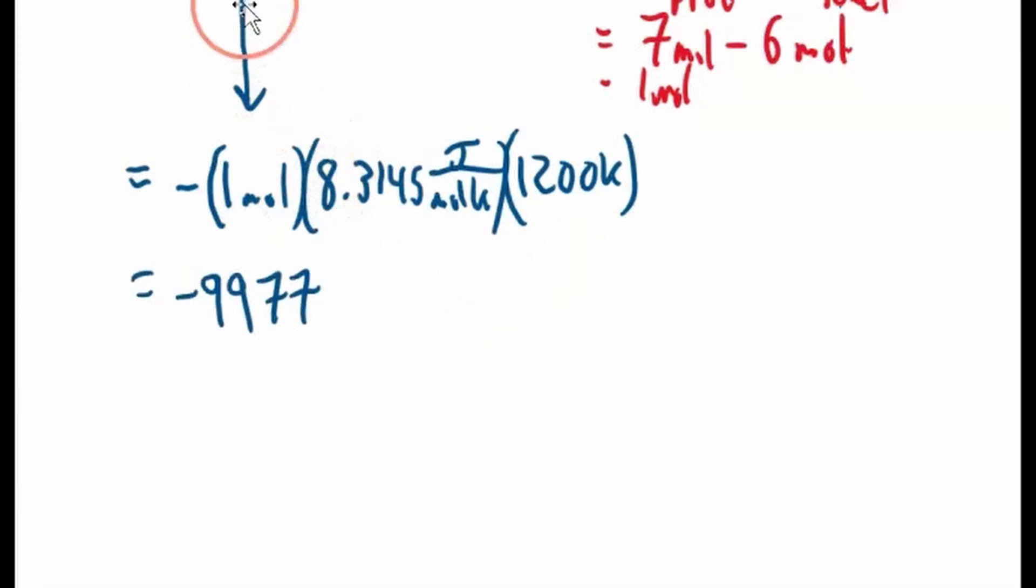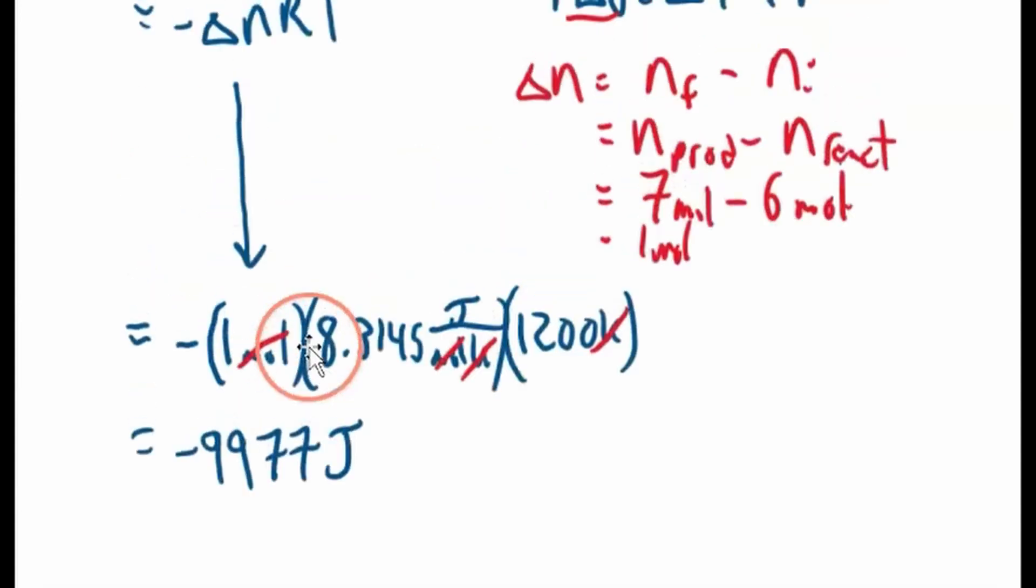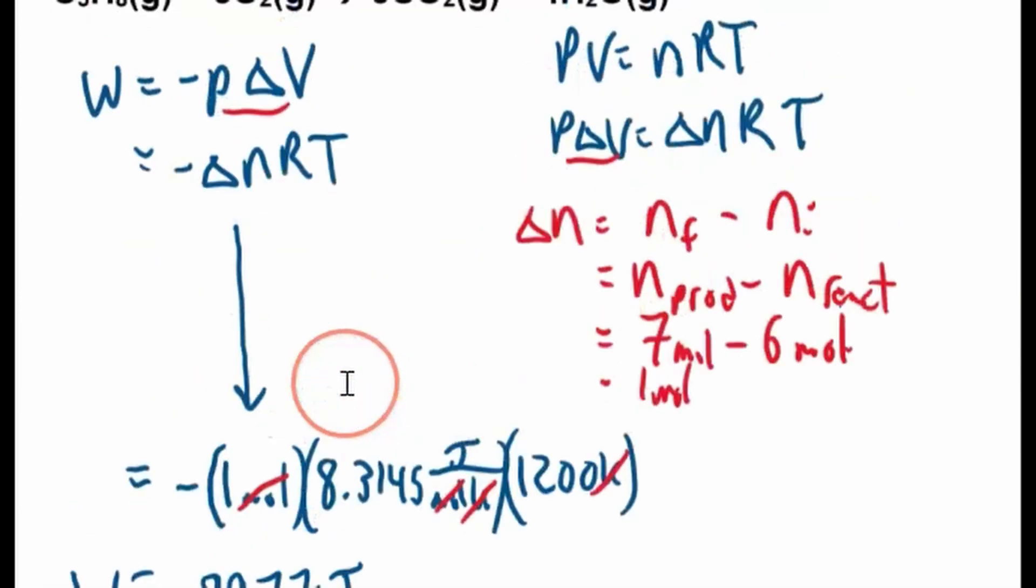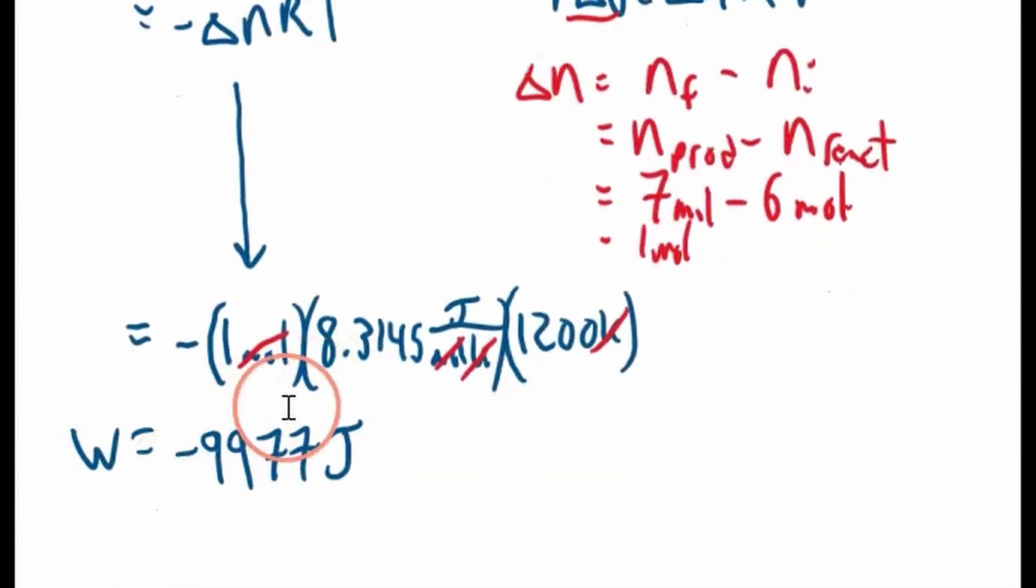Now if we look at the units, this is super important. It looks like moles cancel out and Kelvins cancel out. So we're left with joules here. And you might be thinking, well, this is our answer. We have joules. This is how many joules of work the system does. Right, it's negative work, which means the gas expands.